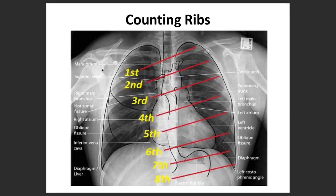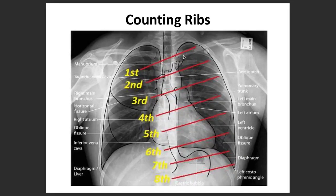Counting of the ribs is important to determine if it's a good inspiration film. A good inspiration film shows six anterior ribs and ten posterior ribs — a six-to-ten ratio. That is why you should be able to count those ribs: one, two, three, four, five, six, and so on. Rib counting is an important part of the assessment.